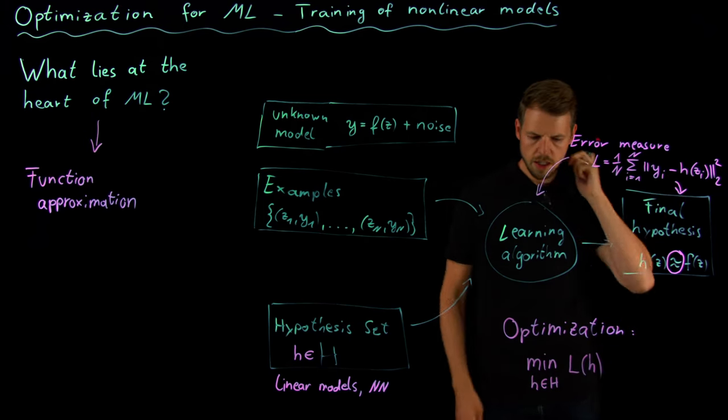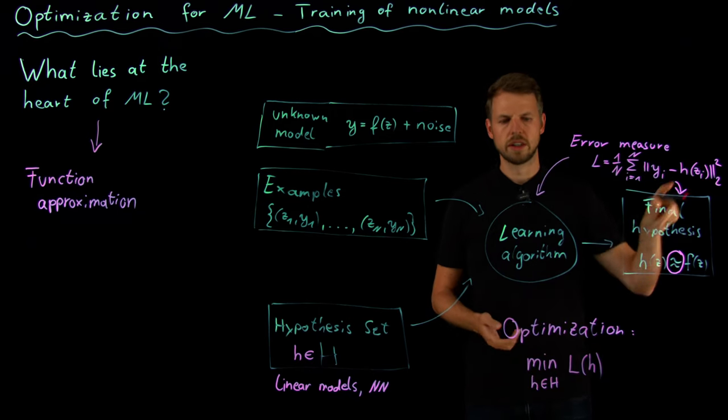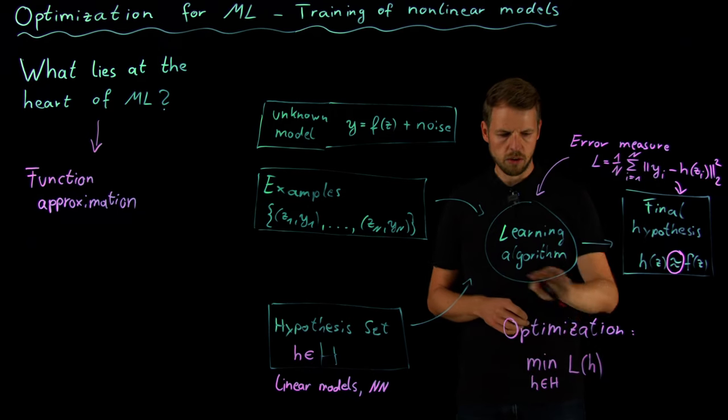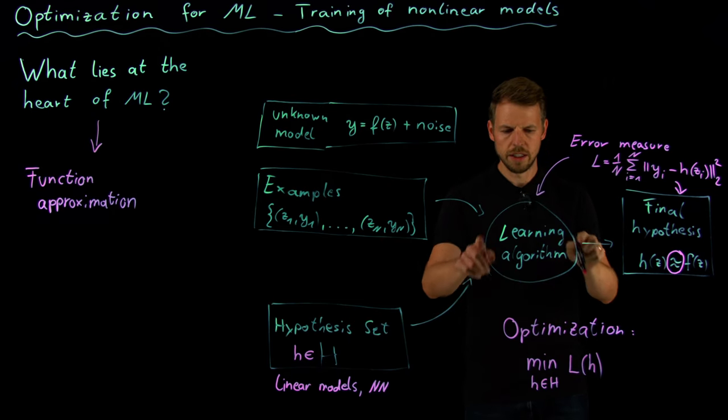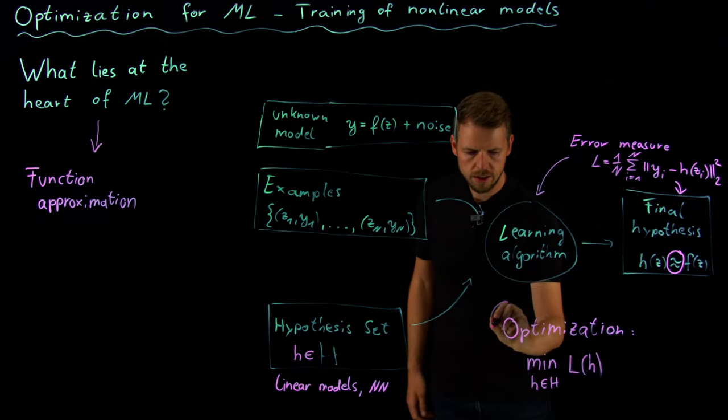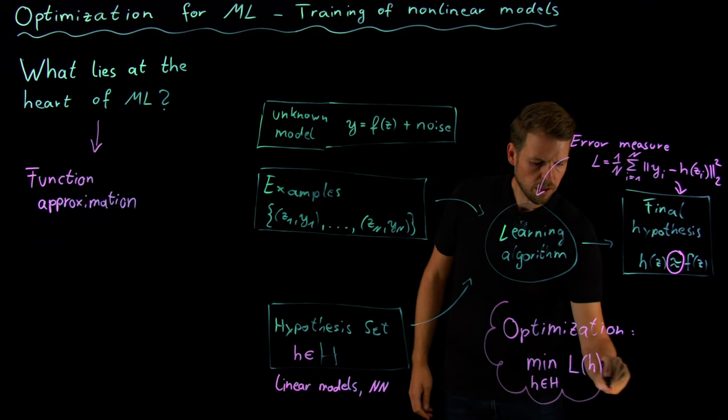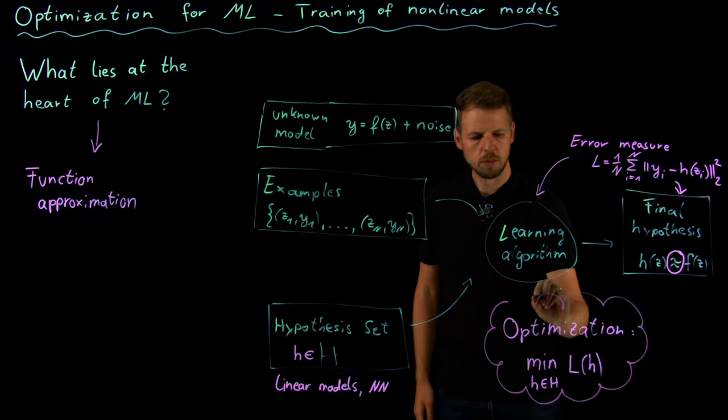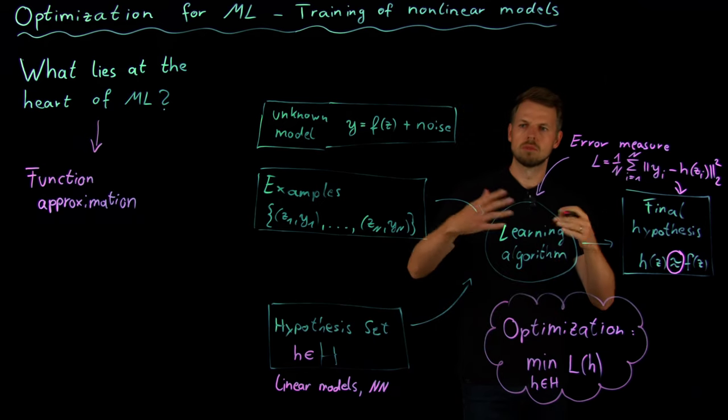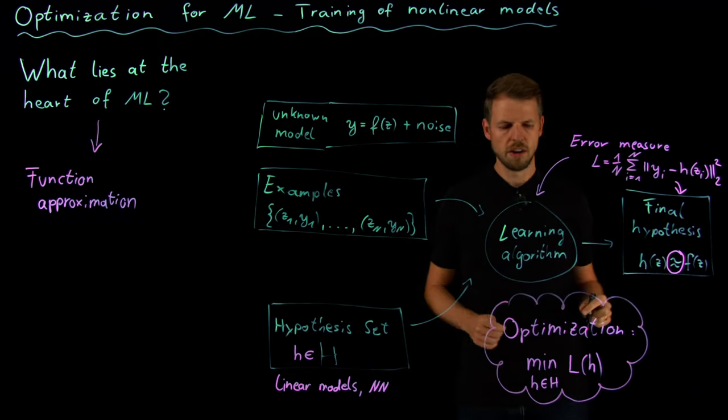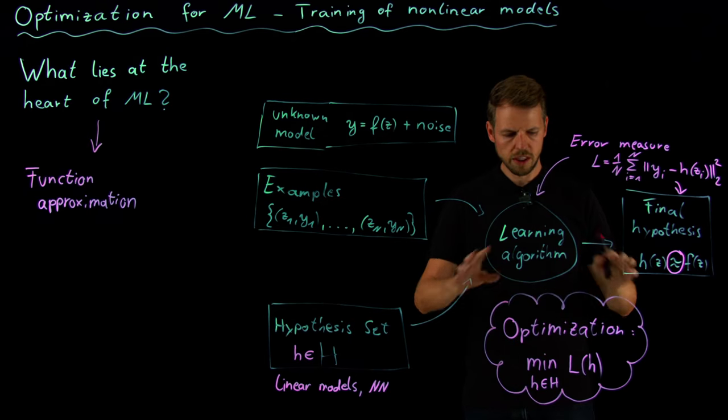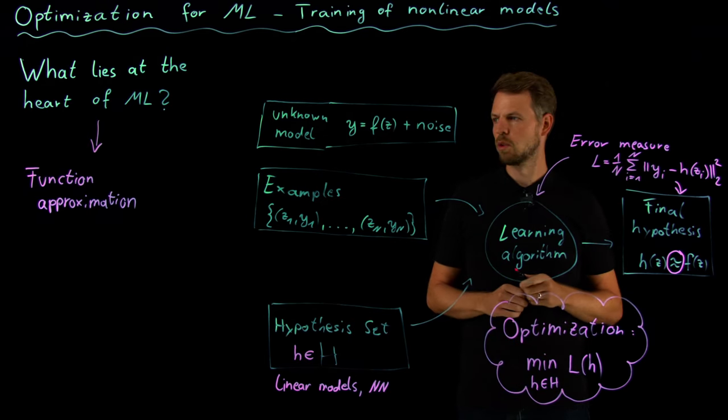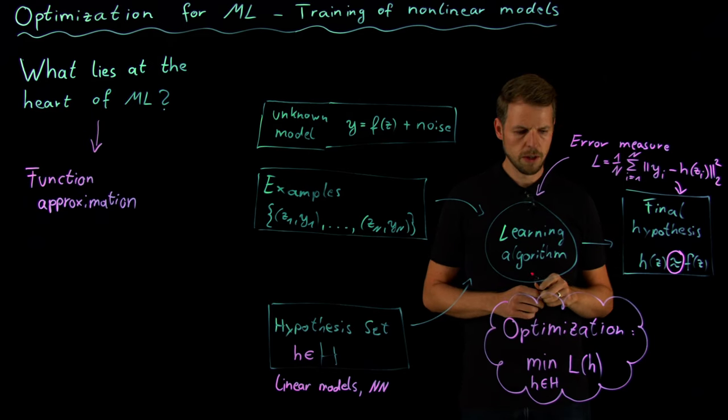Depending on which model I put in here, I get a smaller loss or I get a better loss. This is why optimization is so important in machine learning—it's at the heart of the learning algorithm. And this is why we should know quite a bit about this before training models from data, because it's a very powerful approach but there are also a lot of pitfalls associated with this that we should know about.